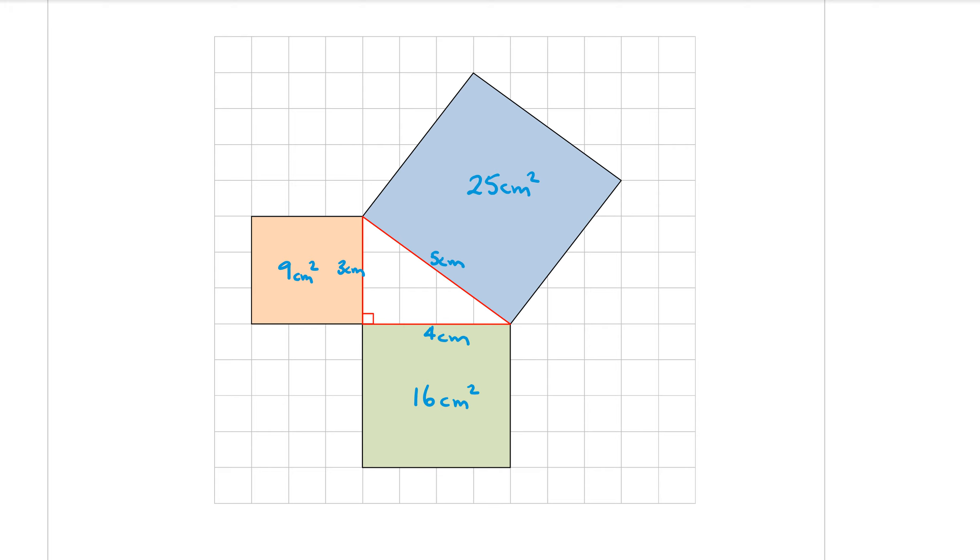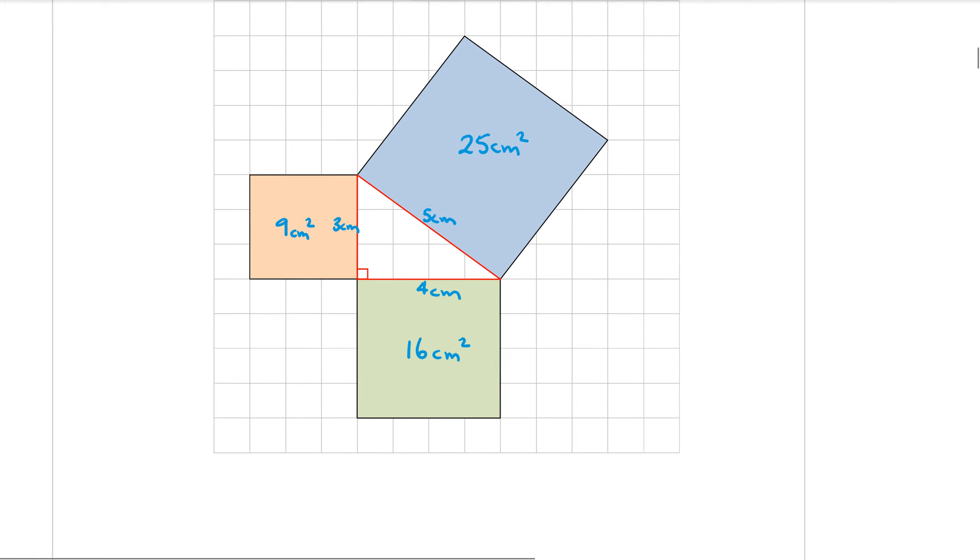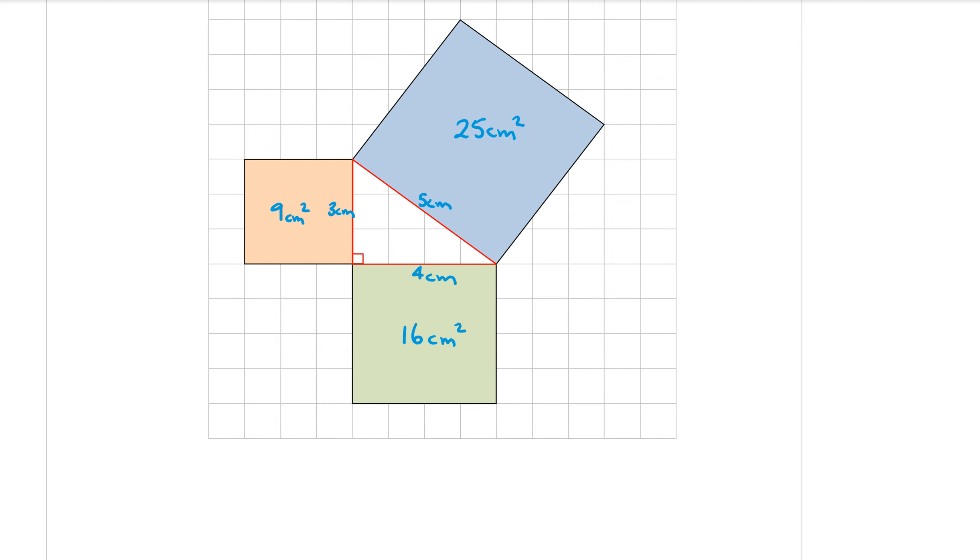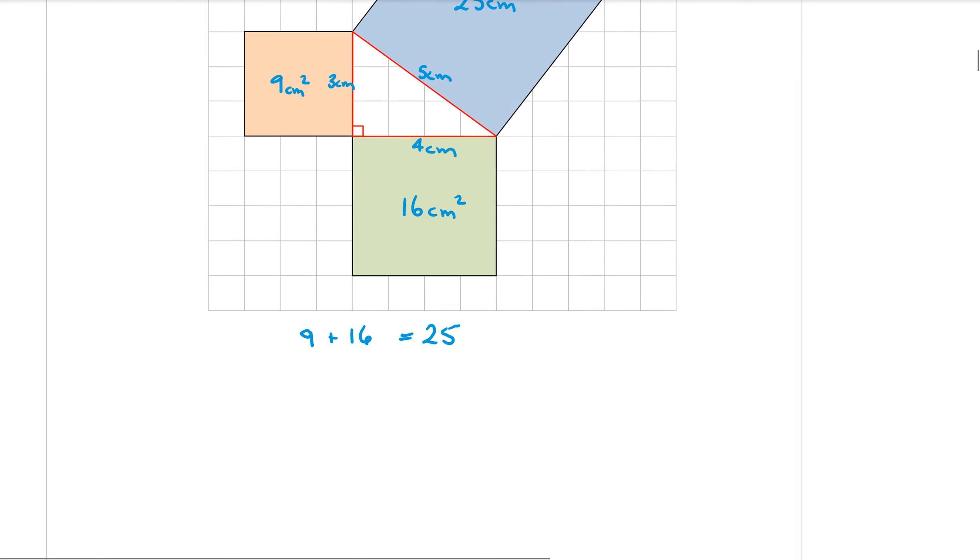Now the interesting thing about all of this is if you have a look what happens when I add those squares together. If I add the two smaller squares, nine plus sixteen, so nine plus sixteen actually equals twenty-five, which was the area of our big square.